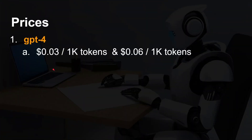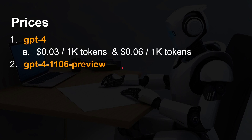Let's talk a little bit about prices. For every 1,000 input tokens and 1,000 output tokens — and a token is not a character, neither is it a word; it's roughly half to three-quarters of a word depending on how the language is split internally. For GPT-4, you are charged 3 cents US per 1,000 input tokens and 6 cents per 1,000 output tokens.